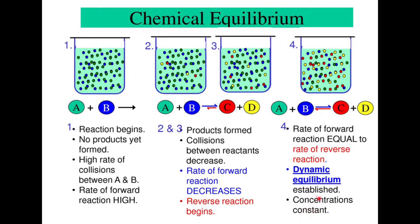The amounts of everything remain constant. So if we were to follow a couple of molecules, we would actually see that they do make C and D, but then those make C and D back to A and B over time. This constantly reacts both ways at the same time. That's what chemical equilibrium really is.